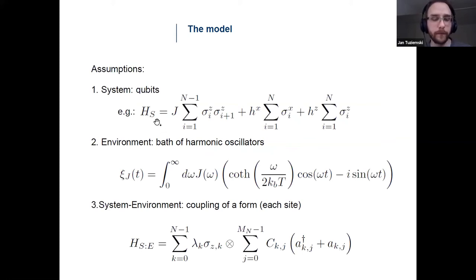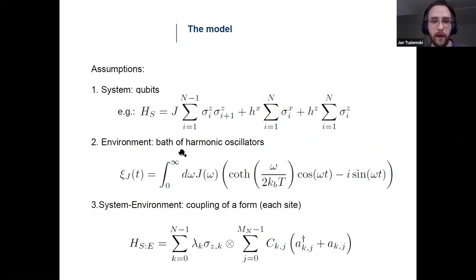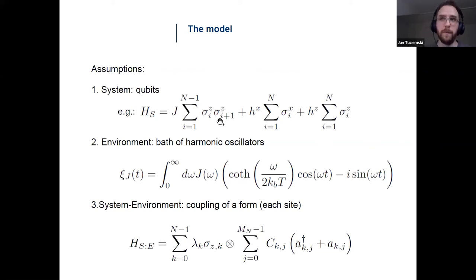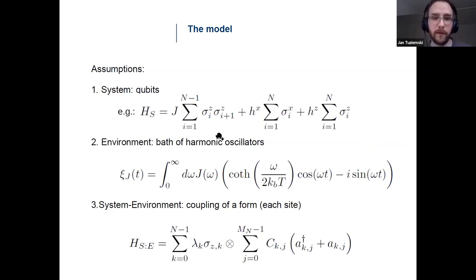This technique allows you to treat different systems, so the precise form of the system Hamiltonian is not critical — I wrote one just to give an impression of how such Hamiltonians look in papers studying OTOCs. The environment is described as a set of harmonic oscillators with a spectral density capturing the coupling strength between oscillators and qubits. Importantly, each qubit of the chain is coupled to its own independent environment — those environments do not mediate interactions between different qubits, though you can relax this assumption.